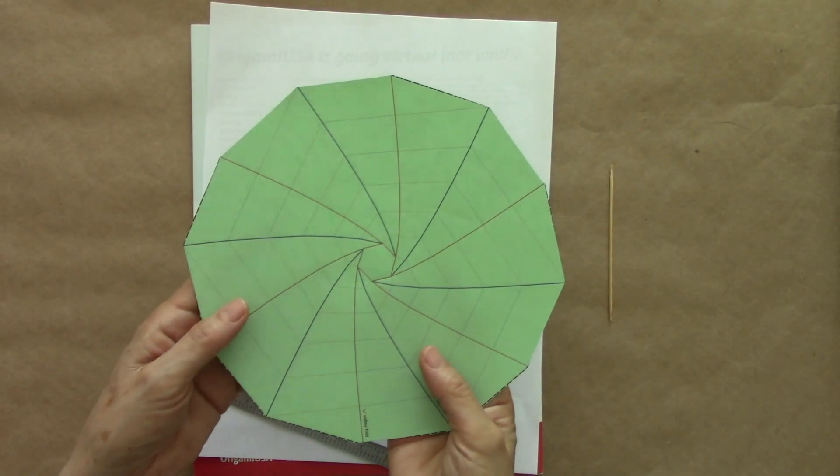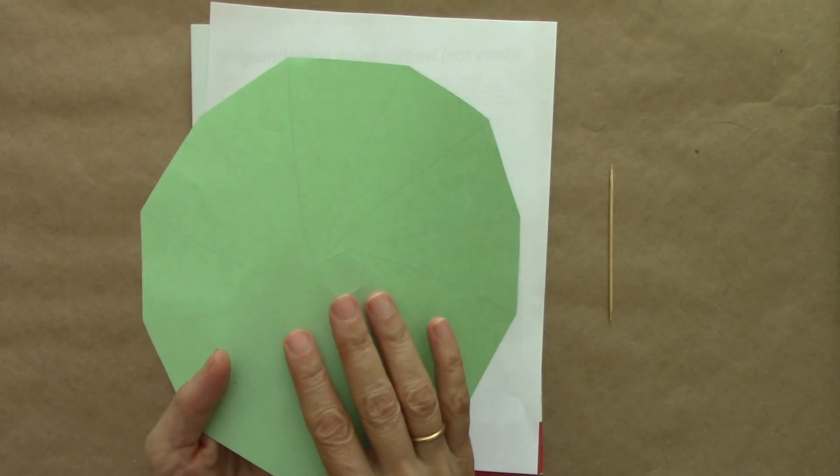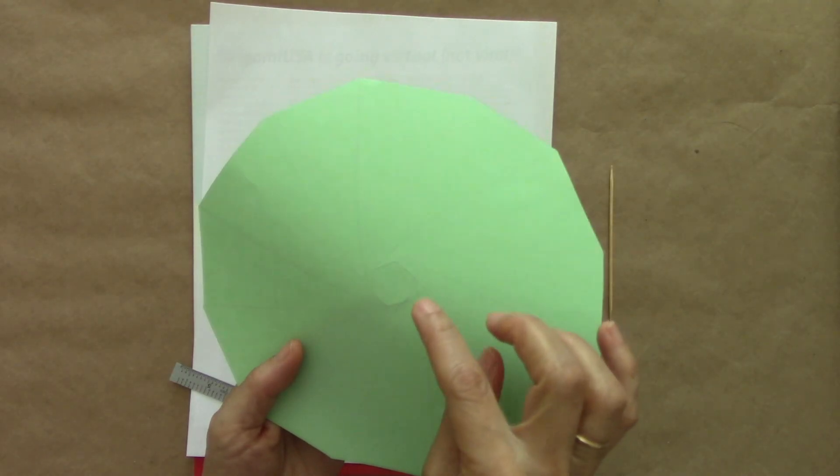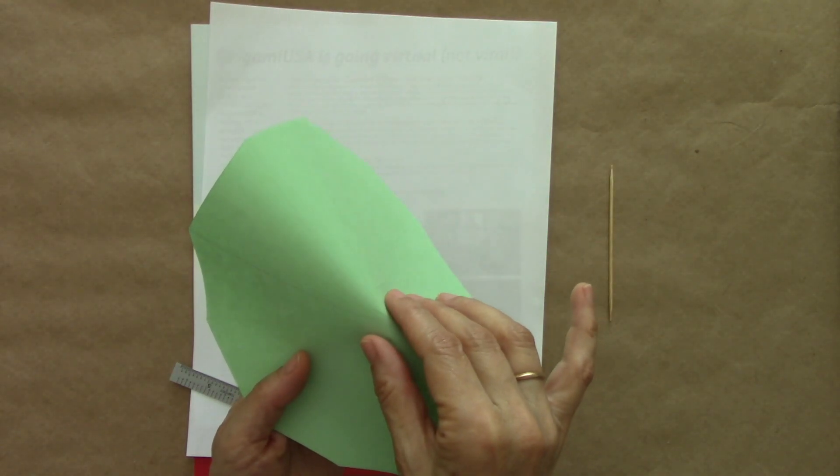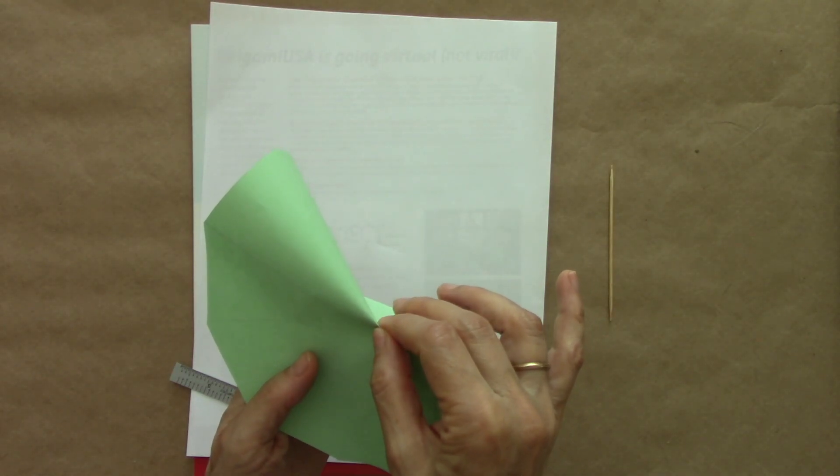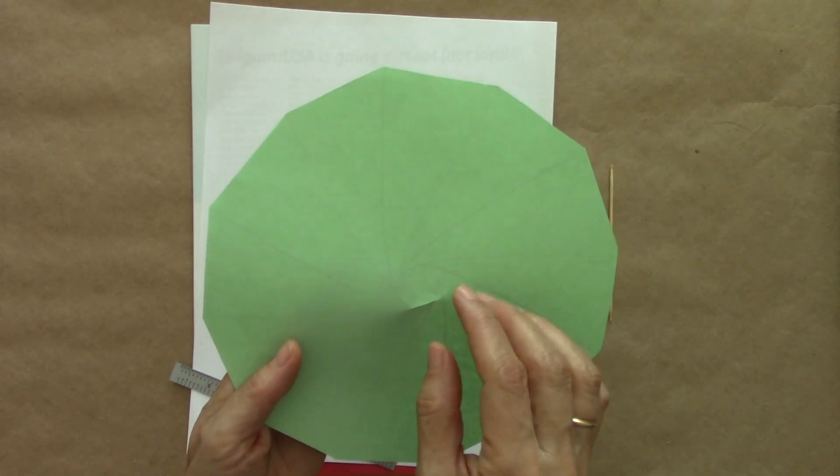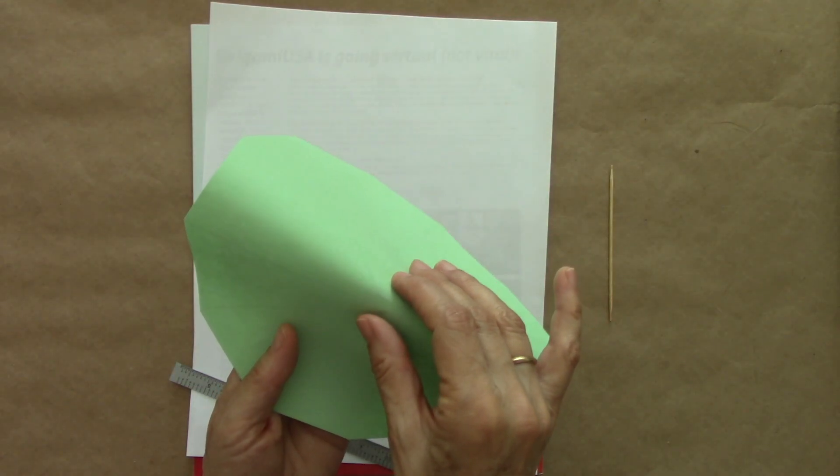Then we are going to pick up the paper, turn it over, and on this side, very gently reinforce that center hexagon. Make sure that you don't go beyond the lines outlining the hexagon.